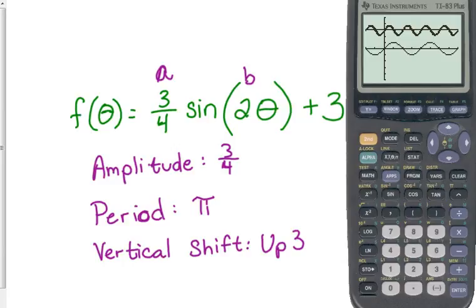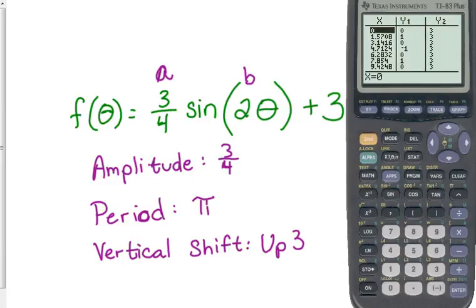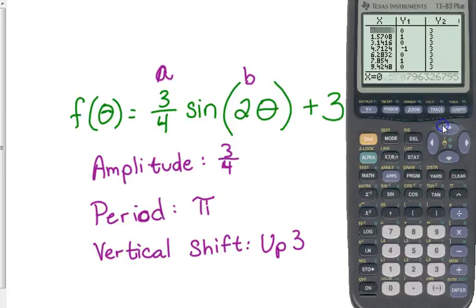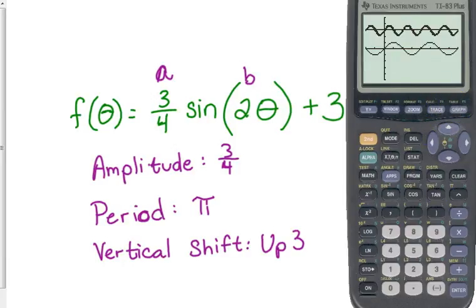We can look at the table — y1 is the original. It looks really weird because it gives us all threes, but that's just because of the period change and the way the table is set up. It's better just to look at the graph.